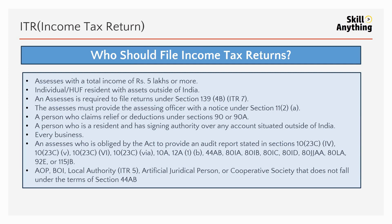Those required to file under Section 139 in ITR-7 must provide the assessing officer with a notice under Section 11. A person who claimed relief or deduction under Section 90 or 90A, a person who is a resident and has a signing authority in any account situated outside India, and every business that has an audit report — all these must file an income tax return.